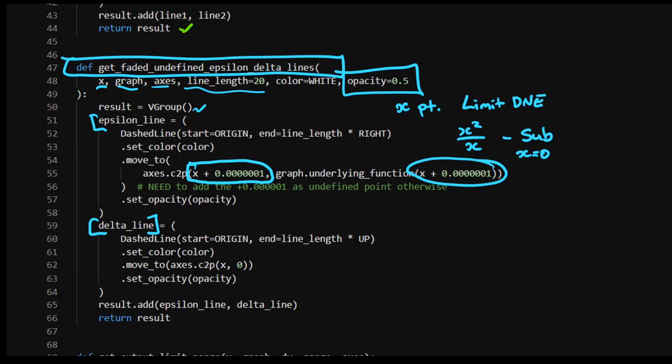you're going to get what's called an indeterminate, which is something's going wrong. And essentially, at x equals 0, that function has, it's not even defined, right? So you've got to put in that plus 0.0000001. Otherwise, if you run it, Python will give you error. Nothing's going to happen there. So then we return that stuff. That's out. Epsilon and delta lines added to that vector group there.